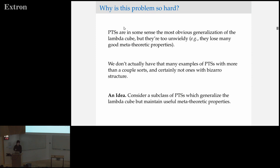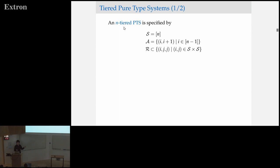One idea is to consider a subclass of pure type systems that generalizes the Lambda cube — so it looks kind of like the systems that we know — but maintains some of the useful metatheoretic properties. This isn't a new idea; people have been considering things like functional pure type systems for quite a bit of time. But I want to consider moving the goalpost even closer and look at a very concrete class of pure type systems. I've been calling these tiered pure type systems, and they're a very simple structure.